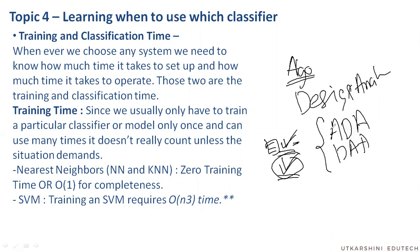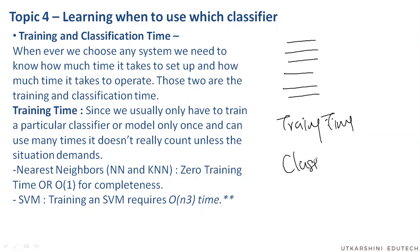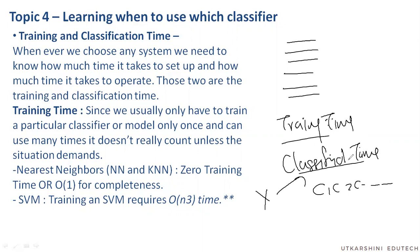Coming to the problem in machine learning — since you have algorithms here as well — the criteria based on which you actually evaluate these is not space and time, it's training time and classification time. How much time it takes to train this particular model, and then how much time we take to use this particular algorithm to classify some x into one of c1, c2, c3, and so on. These two times are what makes one algorithm good or bad.